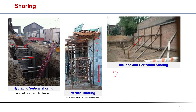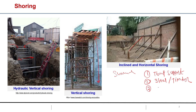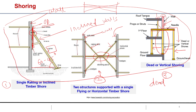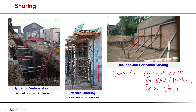In summary, shoring consists of temporary supports made up of either steel or timber. There are three types of shoring: racking shore or inclined shore, flying shore or horizontal shore, and dead shore or vertical shore. If questions are coming on this topic, it is very important to draw these figures, as they are very explanatory.